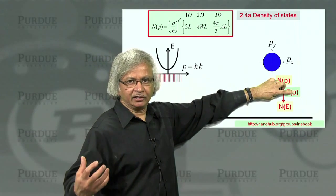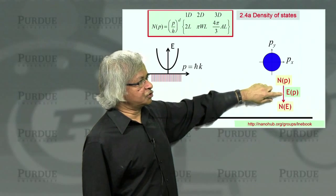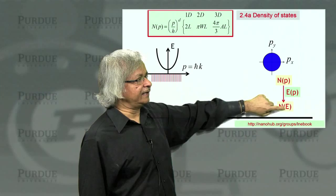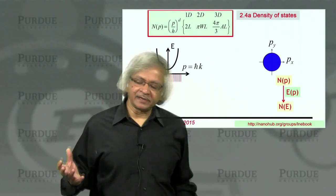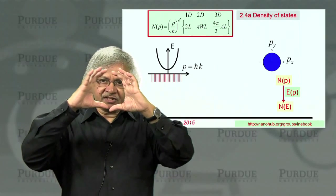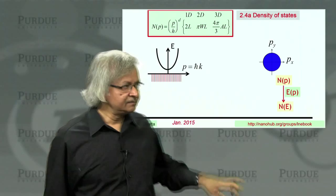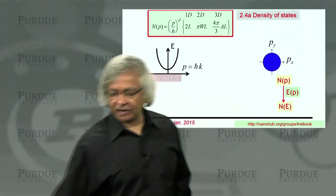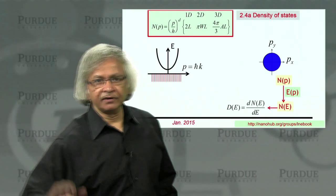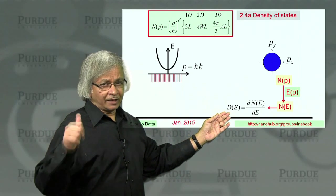We could combine those two to get N as a function of E, which represents how many states you have whose energy is less than E. And once you have that, you can take its derivative and that will give you the density of states.